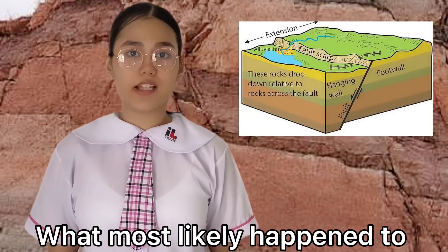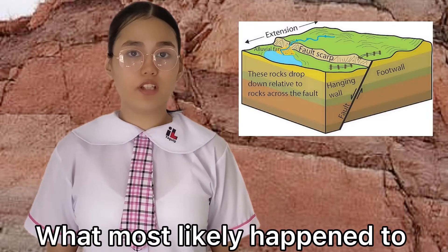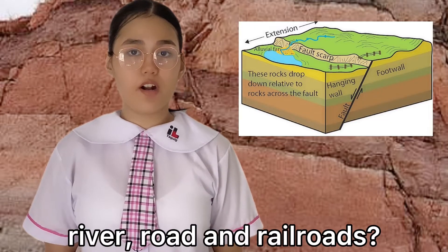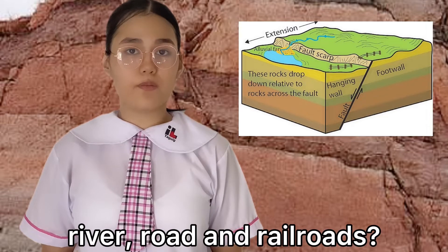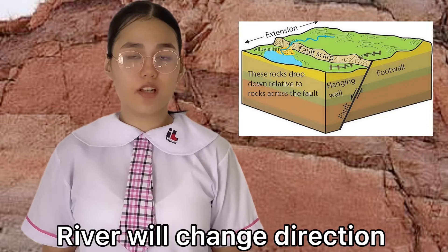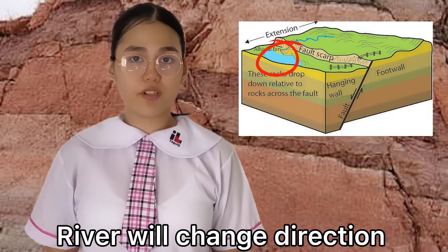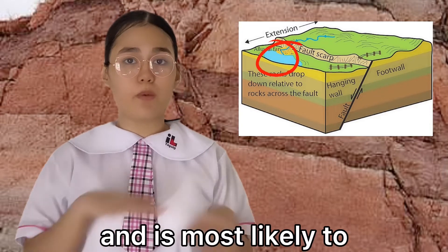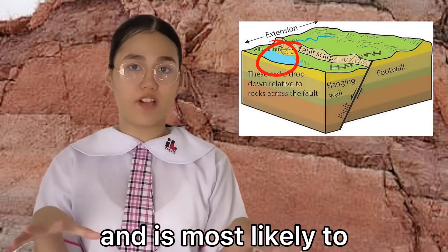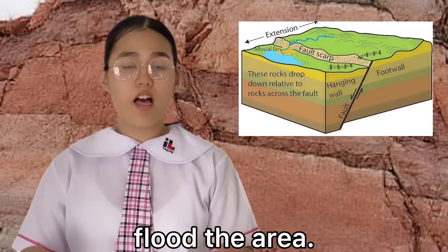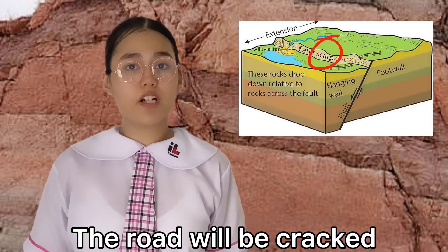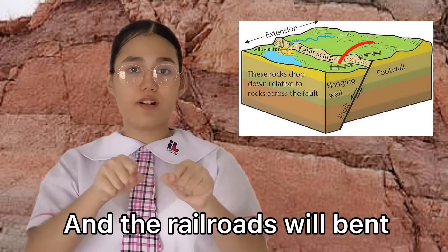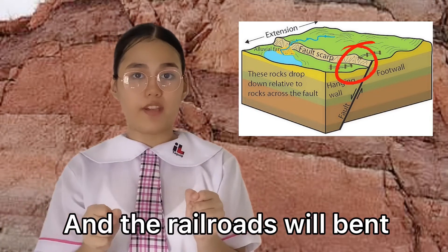What most likely happened to river, road, and railroads? The river will change direction and will most likely flood the area. The road will be cracked and the railroads will bend.